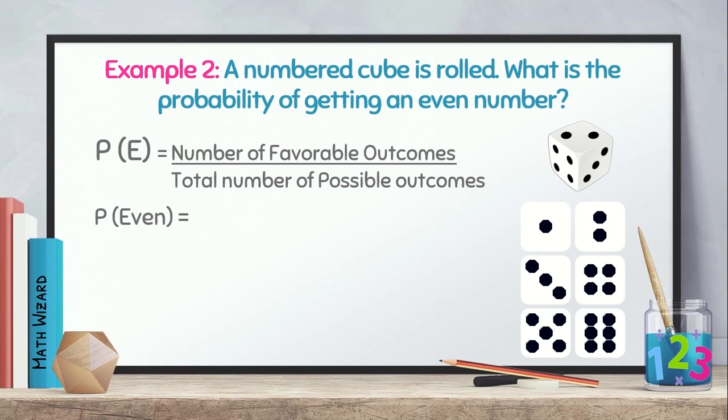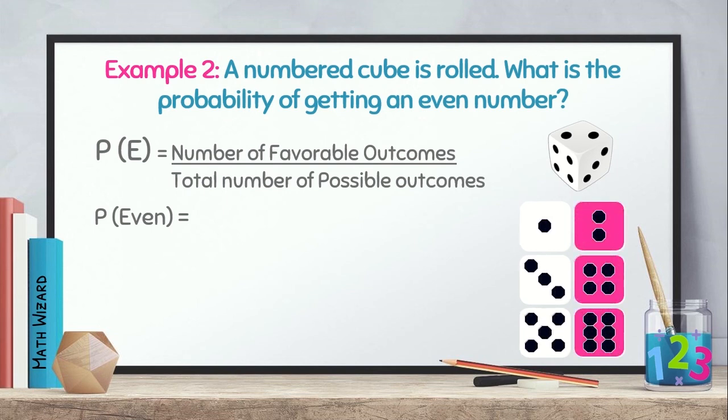We need to identify the probability of getting an even number. We need to find out how many even numbers are there in the cube. So, we have 1, 2, and 3. Meron tayong 3 even numbers. Ito ay si 2, si 4, and 6. Next, the total number of possible outcomes. There are 6 possible outcomes. We have the 1, the 2, 3, 4, 5, and 6.